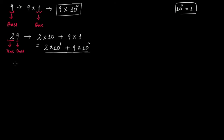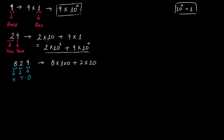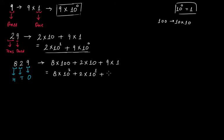Suppose the number is 829, a three-digit number. It has a 1's place, a 10's place, and a 100's place. Therefore this number can be written as 8 times 100, because the multiplication factor for the 100's place is 100, plus 2 times 10, plus 9 times 1. This gives us 8 times 10 to the second power — since 100 is 10 times 10 — plus 2 times 10 to the first power, plus 9 times 10 to the exponent 0. This is 829 expressed in exponential form using powers of 10.